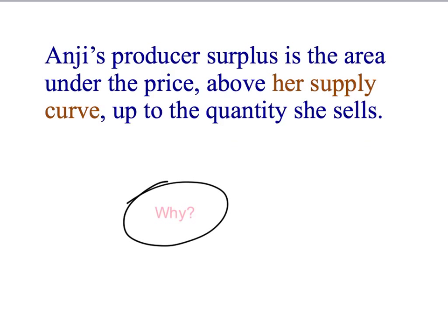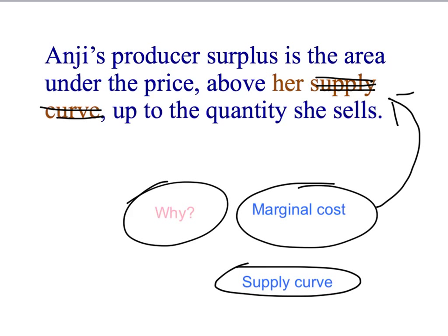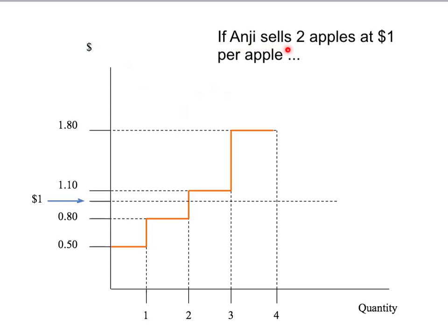Why do we know this? Well, we know that Anji's producer surplus is the area under the price, above her marginal cost curve, up to the quantity that she sells. And we know that Anji's marginal cost curve is the same as her supply curve, so it immediately follows that Anji's producer surplus is the area under the price, above her supply curve, up to the quantity she sells.